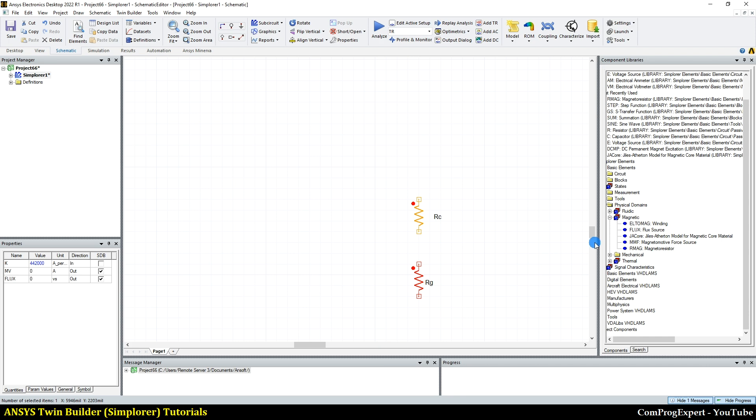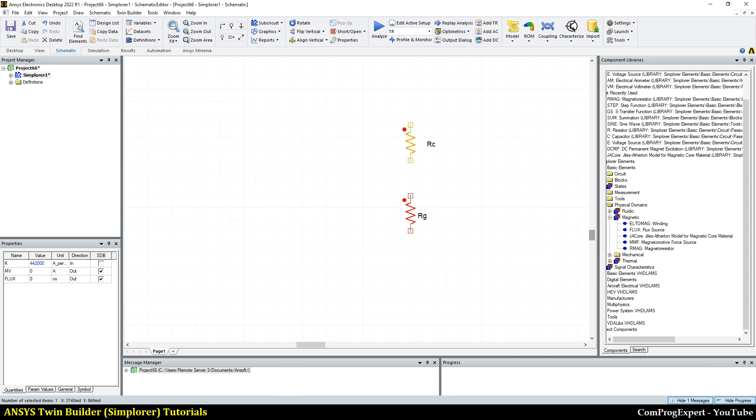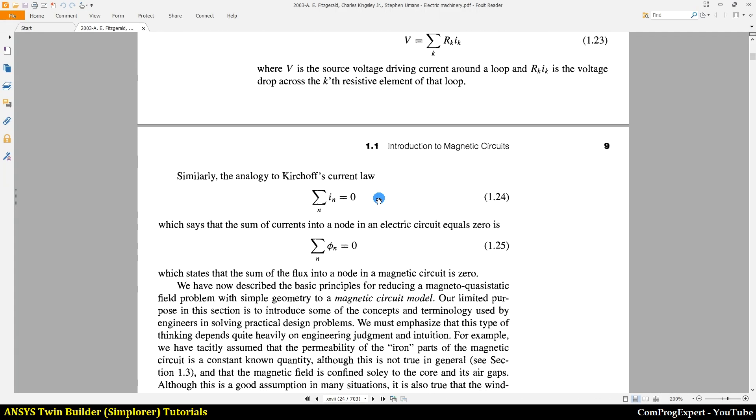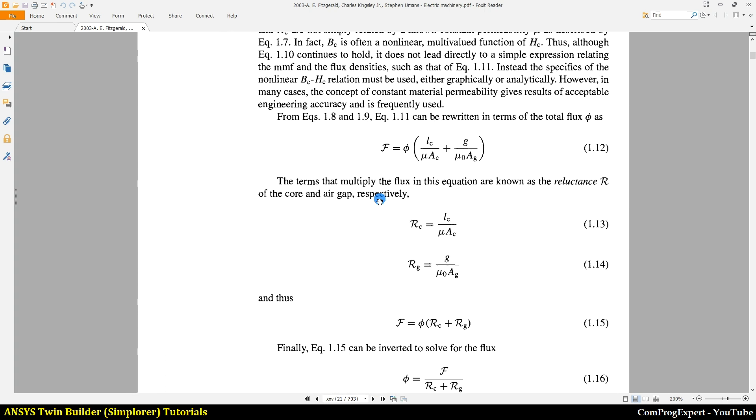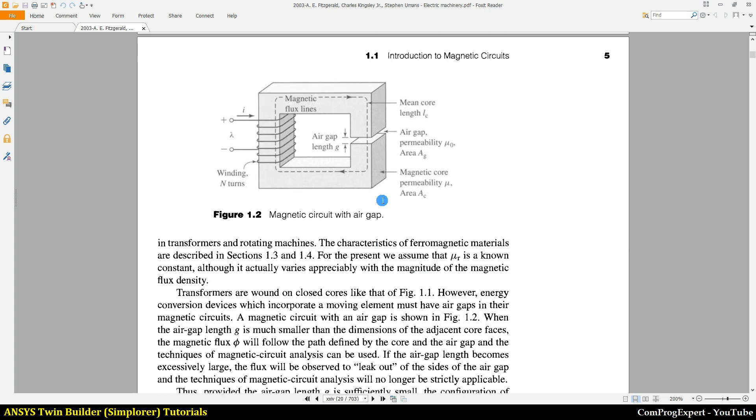So we have these two reluctances in series, right? You know, this is the direction of the flux in this circuit. And the flux is constant. The amount of flux, and we have two reluctances in series.